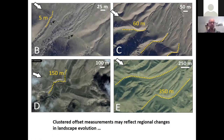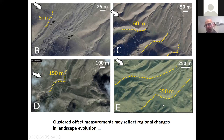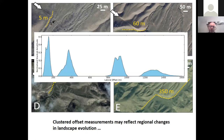The offset measurements along the main Kopet Dag Fault are apparently clustered: we see 5-meter displacements inferred from a single earthquake, many at around 60 meters, a lot at 150 meters, many at 350 meters, and larger ones at 900 to 950 meters as shown earlier. We can plot these cumulative displacements and see various peaks — including the one we dated at about 100,000 years.